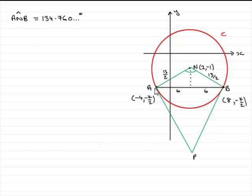Now, in this part of the question, we're told that the tangents at A and B meet at the point P, and we're asked to find the length of AP.